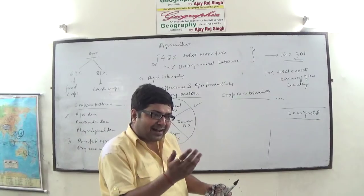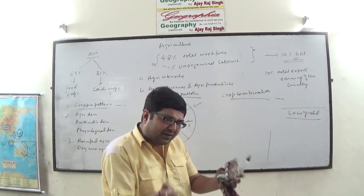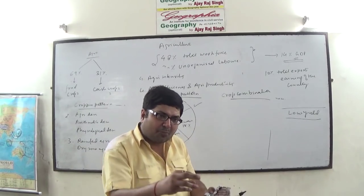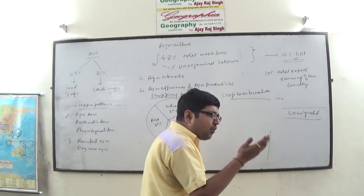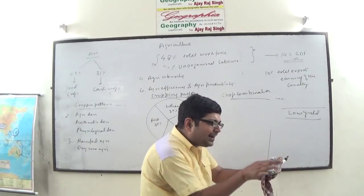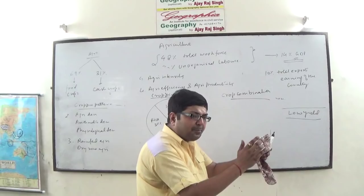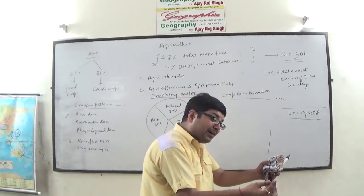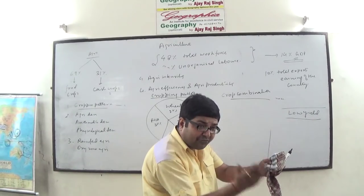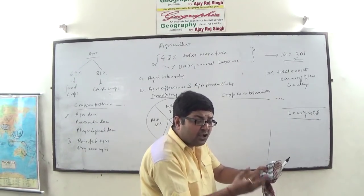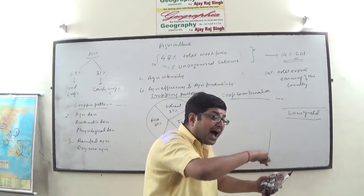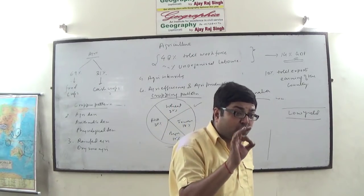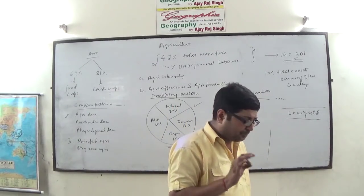Within the same agricultural region, after rice, the second crop is grown, then the third crop. Crop combination means what all different crops are entering into combination — whether along with rice or after the rice. Once the rice is harvested, what all different crops are being grown in any region in one agricultural year — that constitutes the crop combination region.